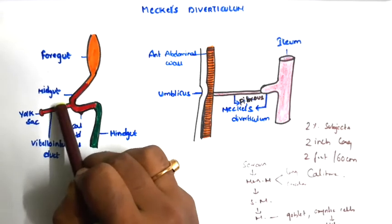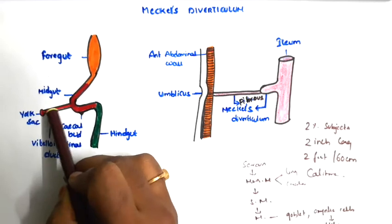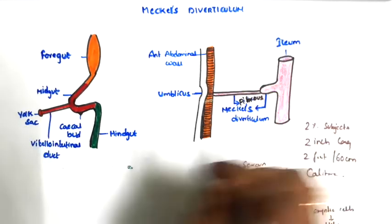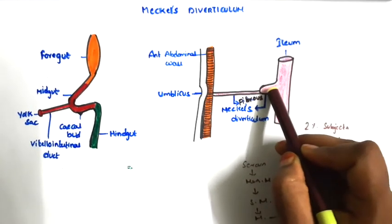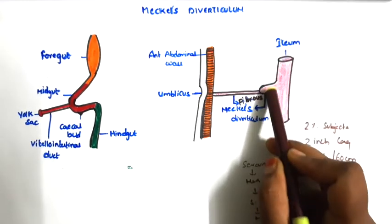Here the persistence of the proximal part remains, whereas the distal part will obliterate. In adult life, we call this Meckel's Diverticulum.